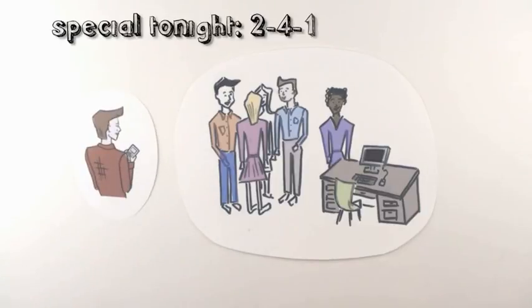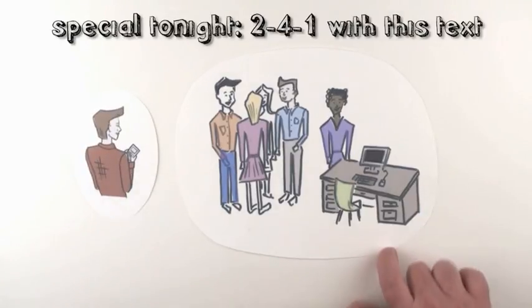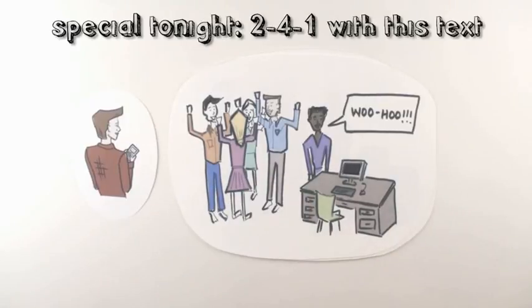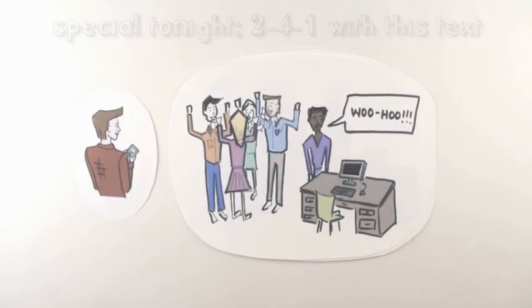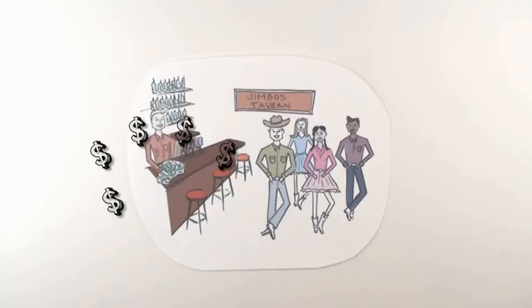Jimbo sends out a text coupon to the list that Becky signed up for the last time she was at his tavern. Becky gets the text and shares the good news. Jimbo has a full house and everyone has a great time.